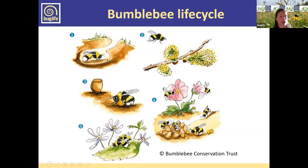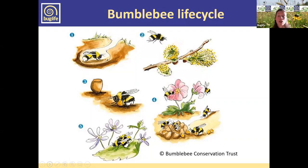She needs to feed up on nectar to build her strength again, then looks for a new nest site — perhaps tussocky grassland, old small mammal holes, or at the base of hedges. Some species actually nest aerially, in bird boxes for example. Once she's found a nest site, she collects pollen. In picture three, that's actually a ball of pollen underneath the queen bumblebee, into which she lays a batch of eggs.